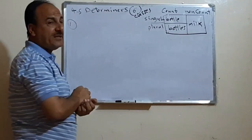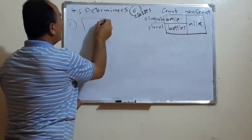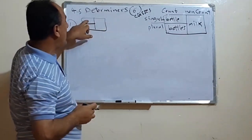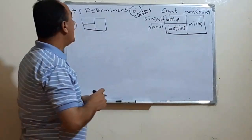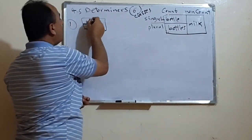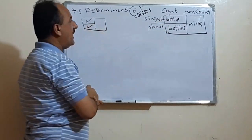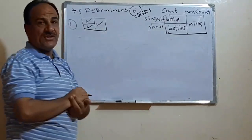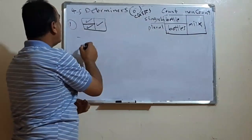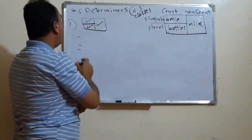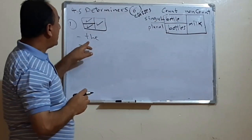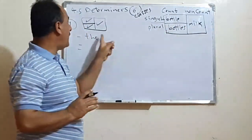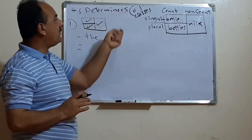The first group of determiners can be used before the singular noun (e.g., 'bottle'), before the plural (e.g., 'bottles'), and before the uncountable. For example, the word 'the' — we can say 'the bottle', 'the bottles', and 'the milk'. So 'the' can be used before all three types.